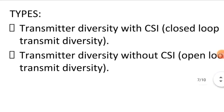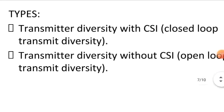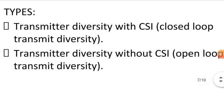Types of transmit diversity. There are two types. One is transmitter diversity with CSI also known as closed loop transmit diversity. Another one is transmitter diversity without CSI also known as open loop transmit diversity.